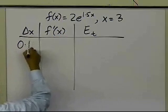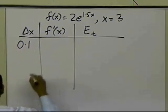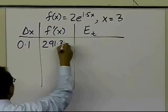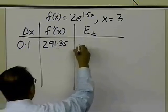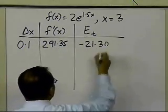So when delta x is 0.1, I just calculated what the value of the derivative of the function is, 291.35, and the true error is minus 21.30.